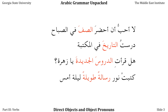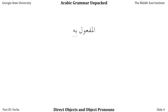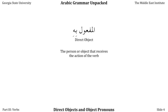كَتَبَتْ نور رسالةً طويلةً ليلة أمس — 'Noor wrote a long letter last night.' What did Noor write? A long letter — it's the direct object of the verb. In Arabic, we call a direct object المفعول به, meaning roughly 'that which has been done to it.' In English, we simply call it a direct object: the person or object that receives the action of the verb.